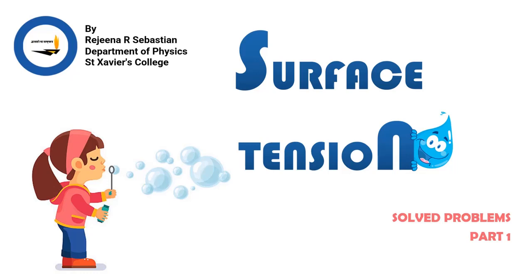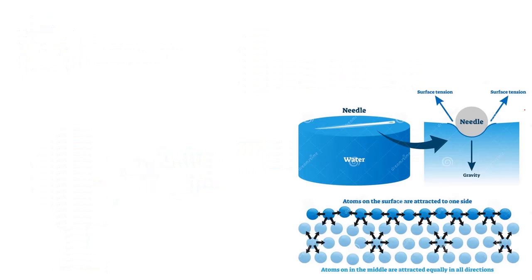Hello dear student. We have already completed our discussion on the chapter surface tension. Now let us do some problems so that we can gain a good understanding in the topic. As we have already discussed, the surface of a fluid acts as a stretched membrane and this is due to the surface tension. The stretching of the membrane, or the energy stored, or the force acting, is known as the surface tension.